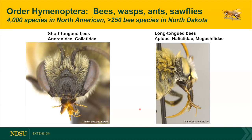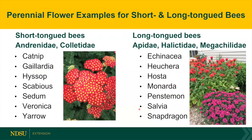The most important families in North Dakota are five: short-tongued bees in Andrenidae and Colletidae, and longer-tongued bees in Apidae, Halictidae, and Megachylidae. We'll cover each one of those. For some additional flower sources for short-tongued bees, we want to make sure we provide sources for both short-tongued bees and long-tongued bees. Some of my favorites are Catnip, Sedum, Veronica, and Yarrow.